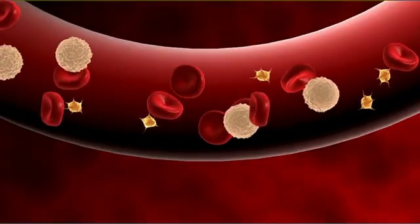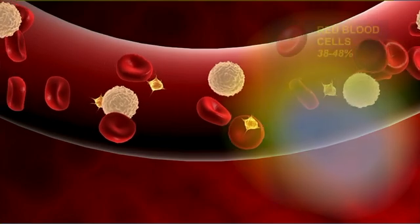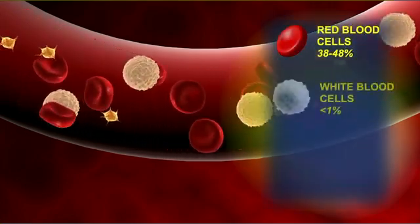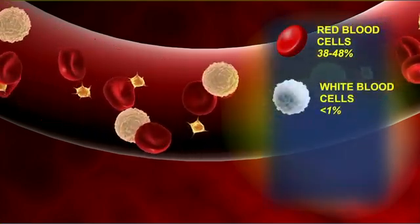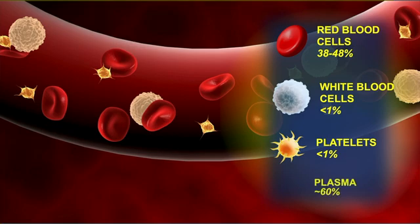In the case of blood, the cells are the red blood cells, the white blood cells, and you even have some cell fragments called platelets. The extracellular stuff, or the extracellular matrix, is called plasma.